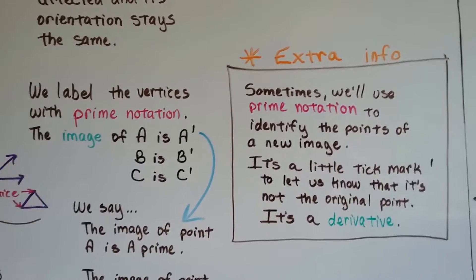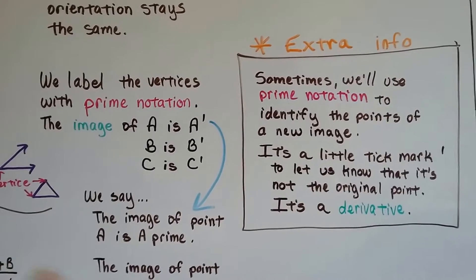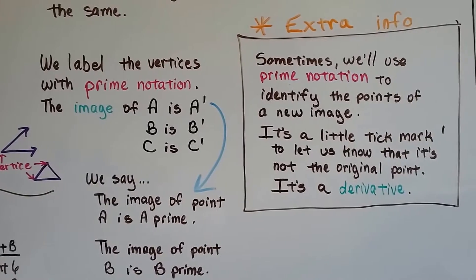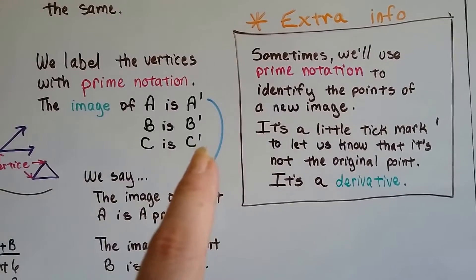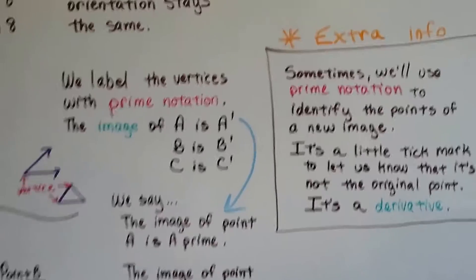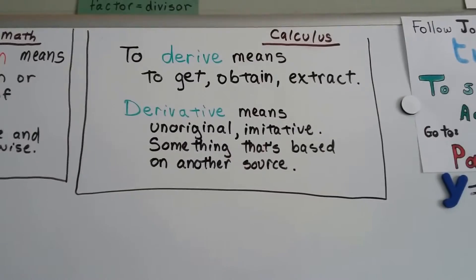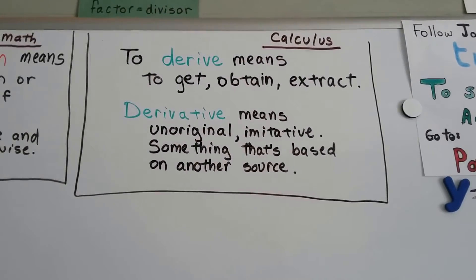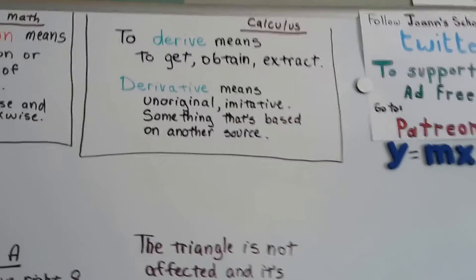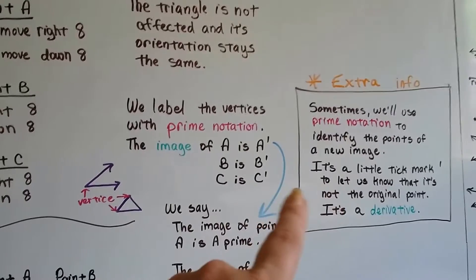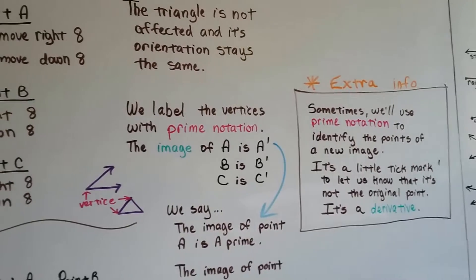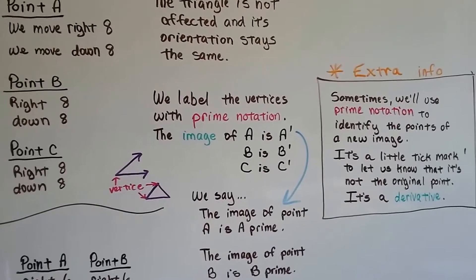So this is extra information. It's above your level, but hey, wouldn't you like to know stuff that everyone else doesn't? So sometimes we'll use this prime notation with this little tick mark to identify the points of a new image. This little tick mark is used to let us know that it's not the original point. That's how we know that it's not a pre-image, that it's an image, because it's got that little tick mark. It's a derivative. And to derive means to get or obtain or extract something. A derivative means it's unoriginal. It's not original. It's imitative. It's like imitation. It's something that's based on another source. And they use that in calculus. It's a derivative of a function. So you'll hear that as you get older. And I just wanted you to put that in your brain and tuck it away for next year or the year after. When you do pre-calculus or calculus, you'll say, oh, I think I've heard that word before. That's why I'm telling you now. So you don't need to memorize that. I just want to introduce it to you.